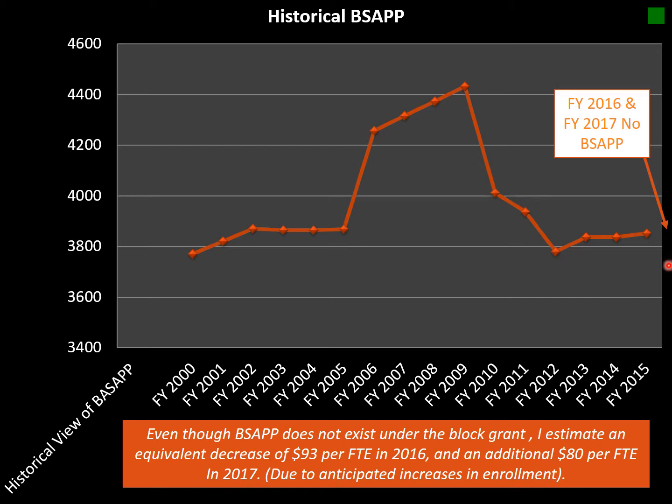In 2016 and 2017, we don't have a base state aid per pupil because we are locked into the same money we received two years prior. However, if I were to estimate the amount of money we are receiving per pupil, since we are growing, I would estimate between $3,600 to $3,700 — and you would have to go back to the 1990s to see those dollar figures per pupil. The base state aid per pupil was the funding we receive for operations and instruction for our students.